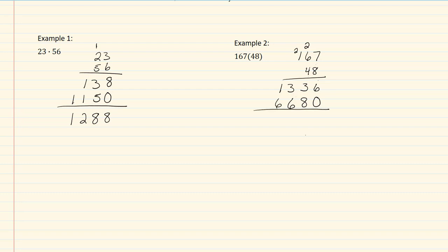I'm now ready to add my digits. So 6 plus 0 is 6. 3 plus 8 would be 11. Carry my 1. 6 plus 3 would be 9, plus 1 would be 10. Carry my 1. 6 plus 1 would be 7, plus 1 would be 8.